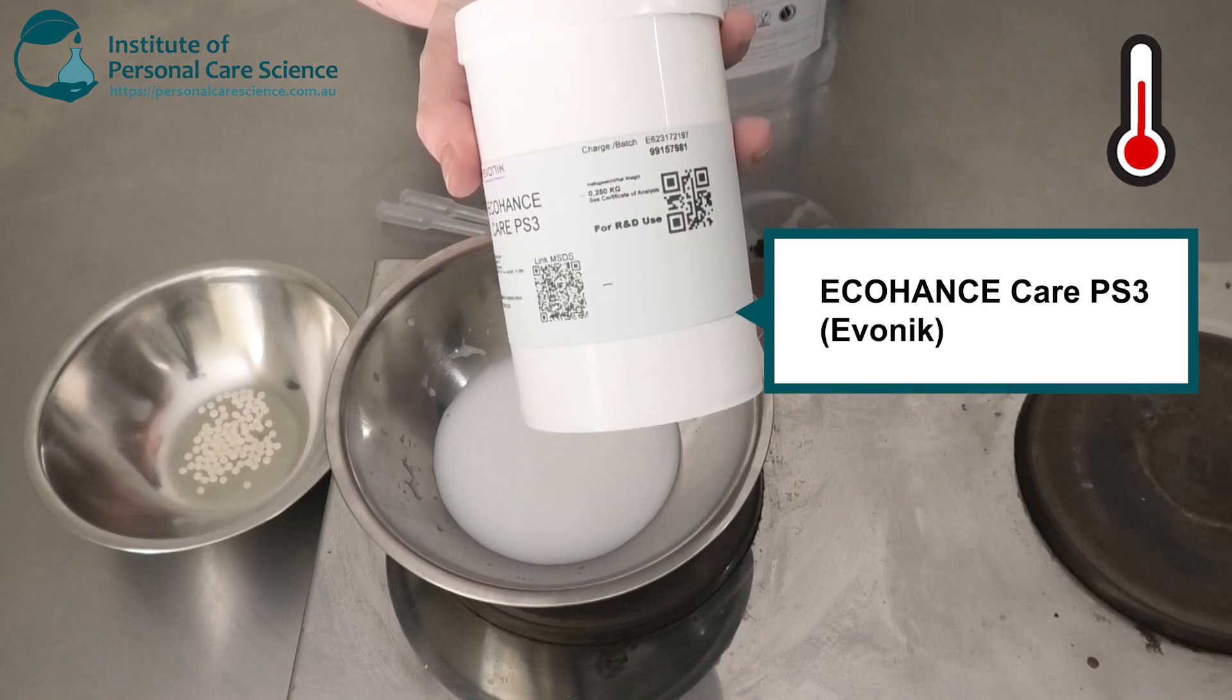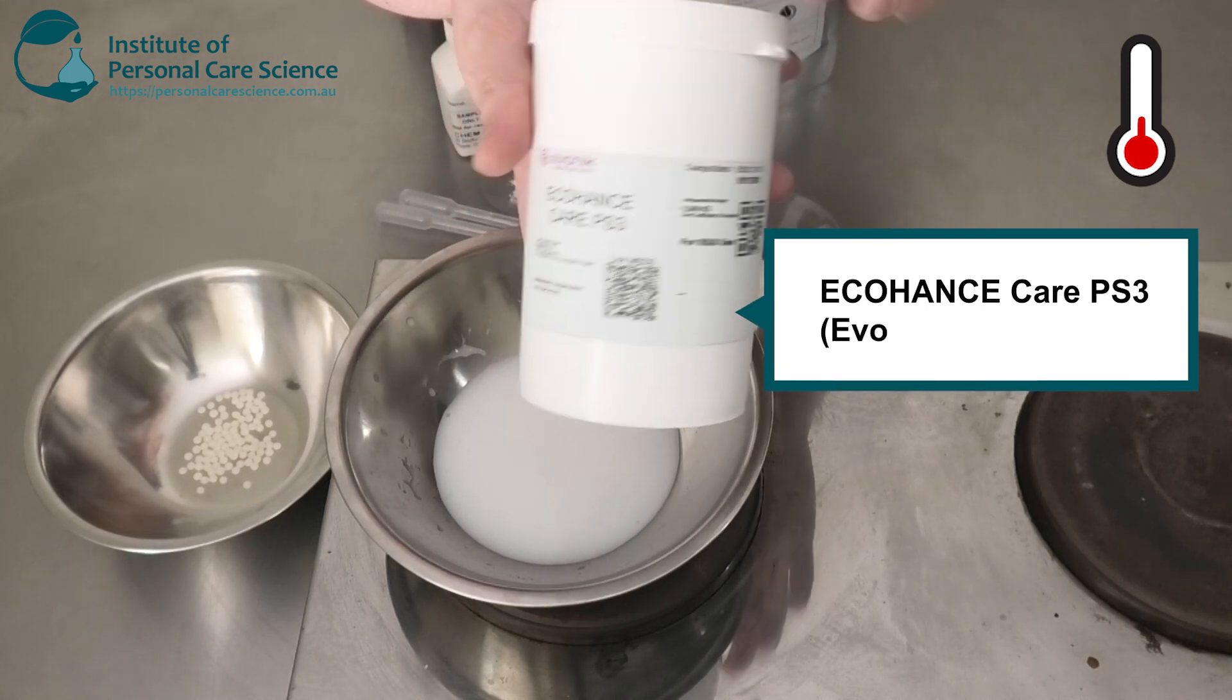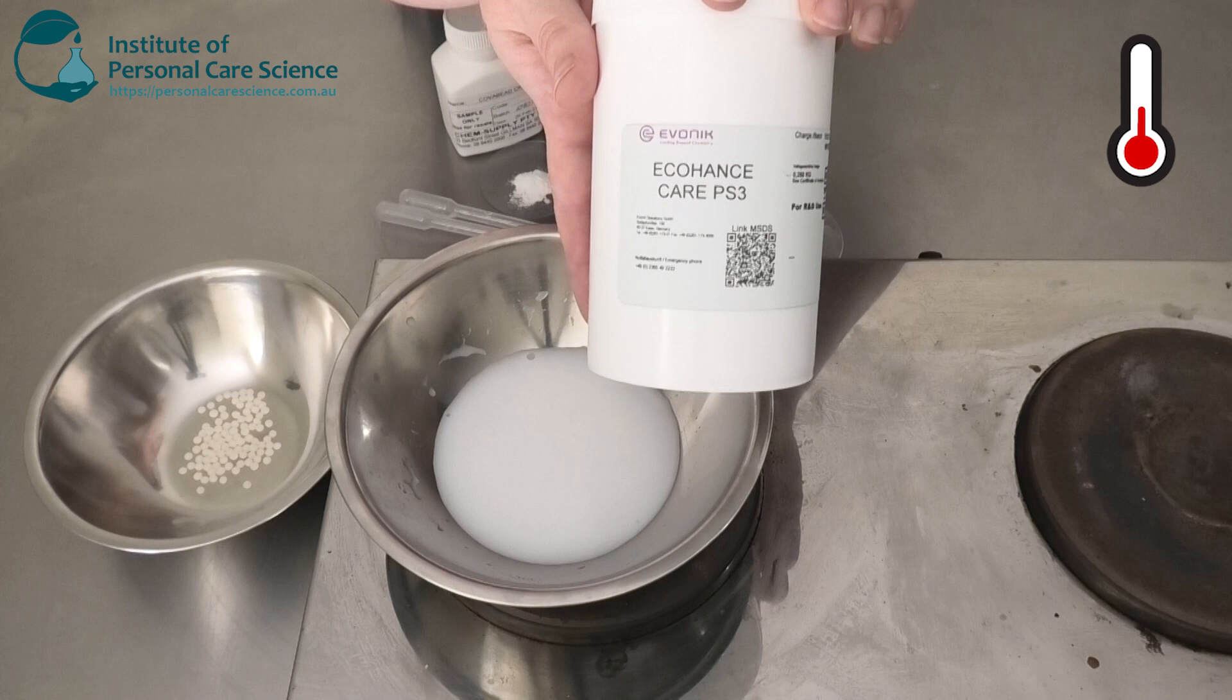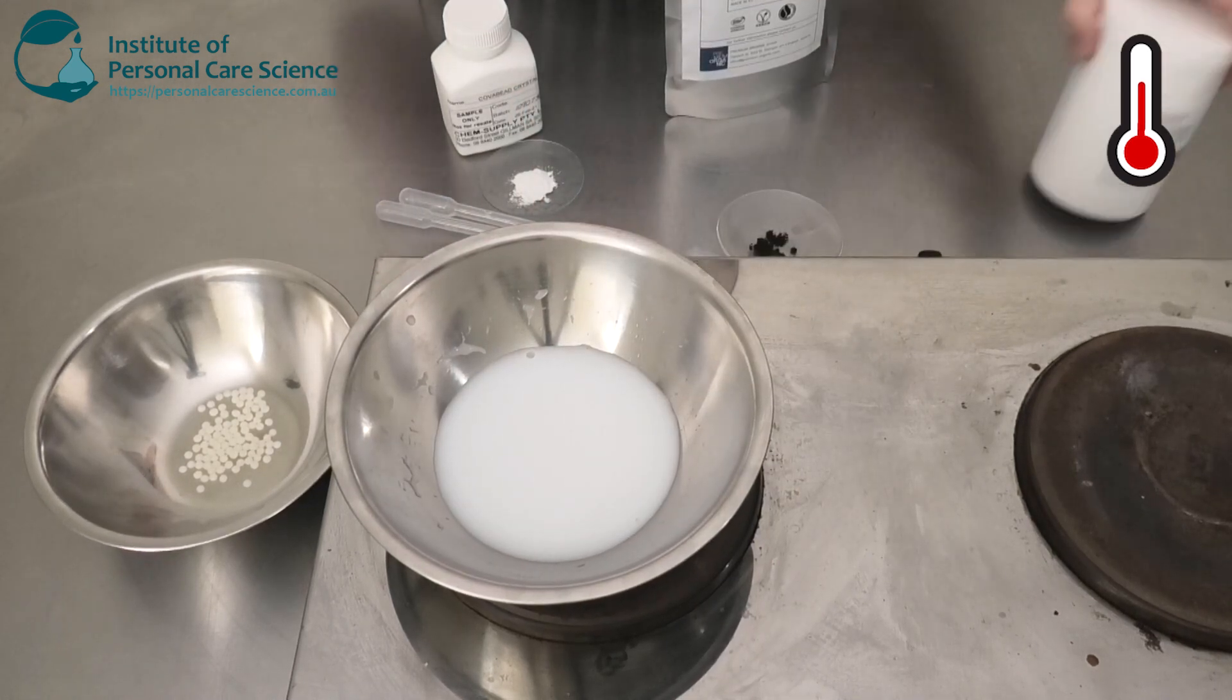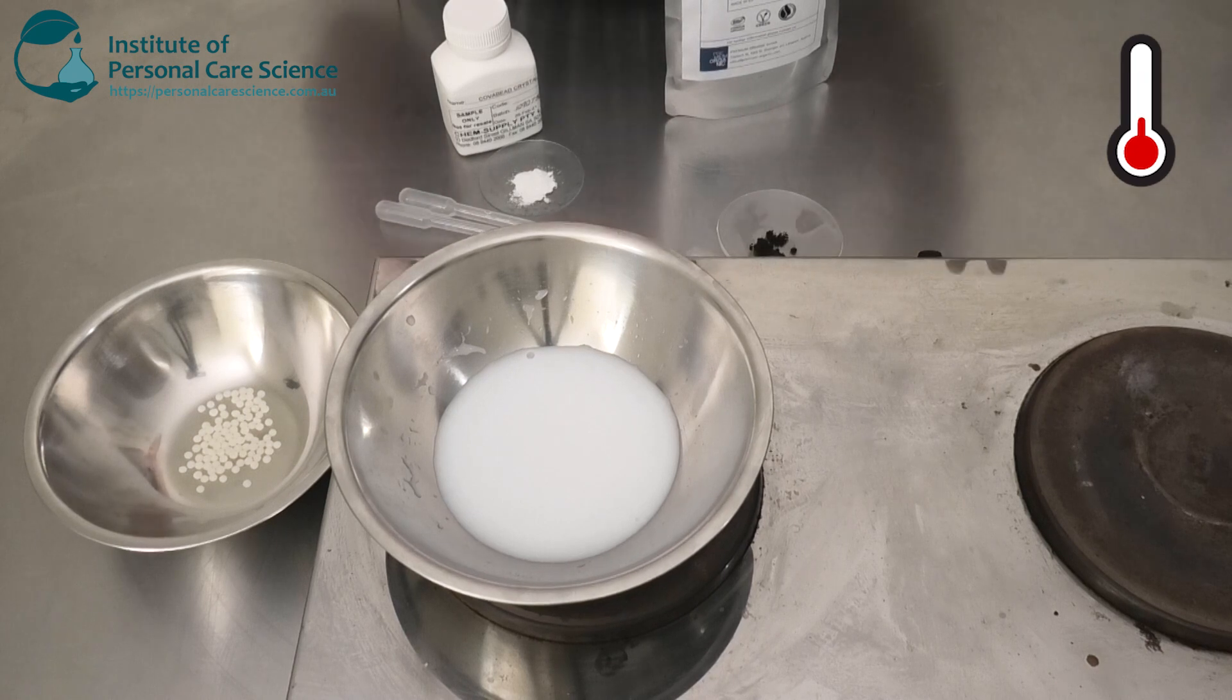This is an oil-in-water non-ionic emulsifier from Evonik, and it's very sustainable and 100% natural. It also has a really nice soft, silky skin feel to it as well, so that's going to be perfect in our moisturizer.